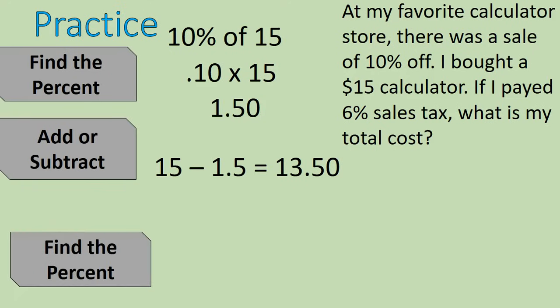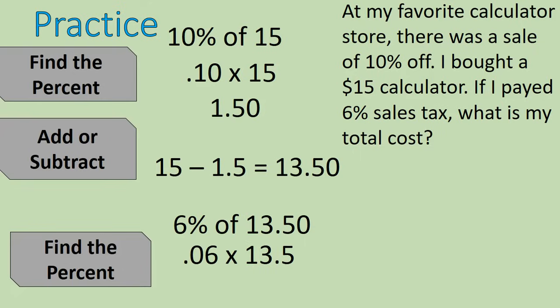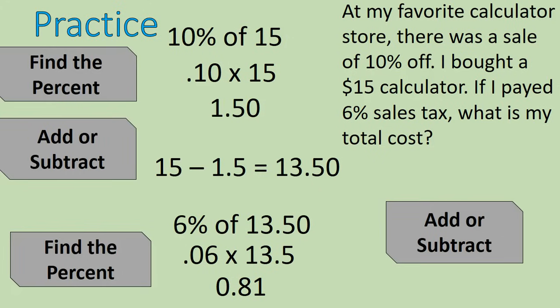Now we're going to move on to the next step: calculating the sales tax. I am going to find the percent — 6% of $13.50, my tax on my new amount. The decimal for 6% is 0.06 — very important that you include that zero. 0.06 times $13.50 gives me $0.81. That's my tax. Because it's a tax amount, I'm going to add it on. So I have my $13.50 plus my $0.81 and that gives me my new total of $14.31 — after the discount of 10% and adding on 6% tax. So we did two steps with this one. Same exact steps.